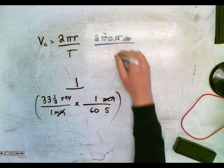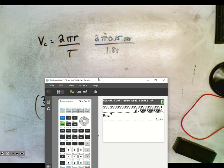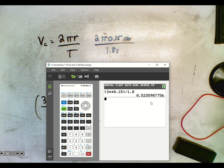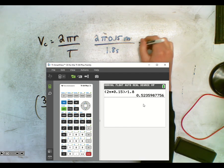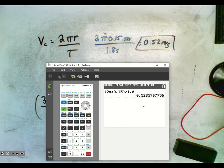So 1.8 seconds goes into our formula. Now we go 2 pi times 0.15 divided by 1.8. We have 2 significant figures, so the speed is 0.52 meters per second. And that's how we find our tangential velocity — that's how we find the speed.